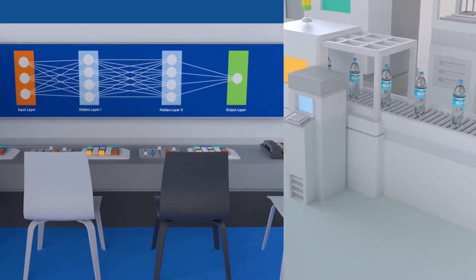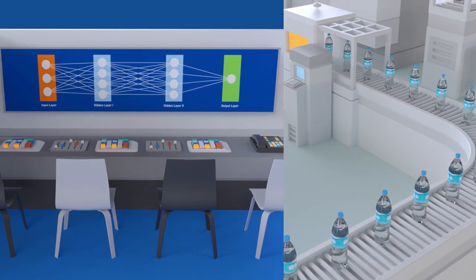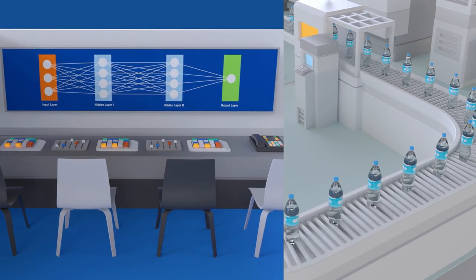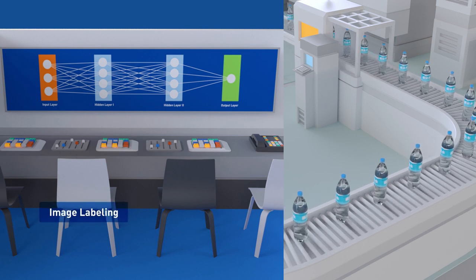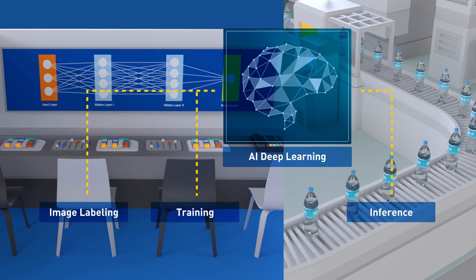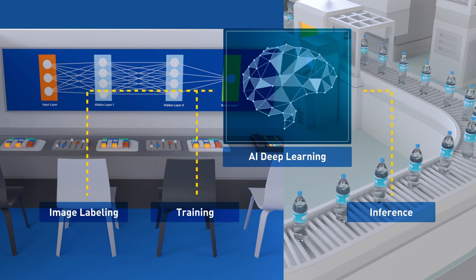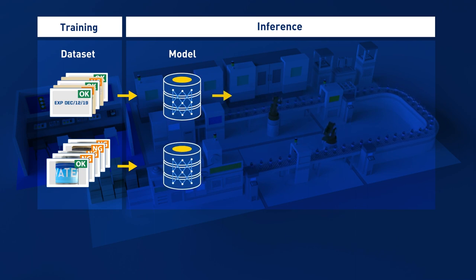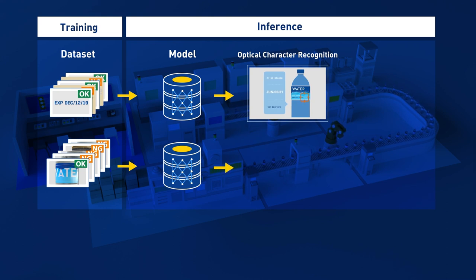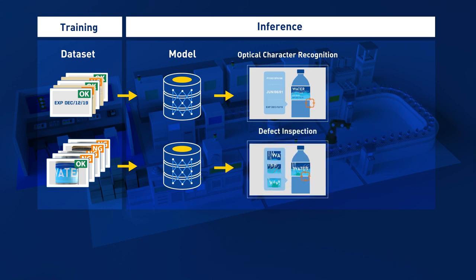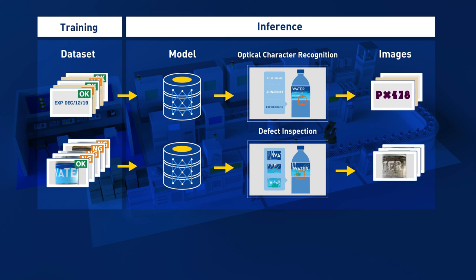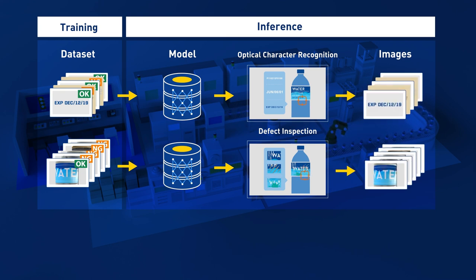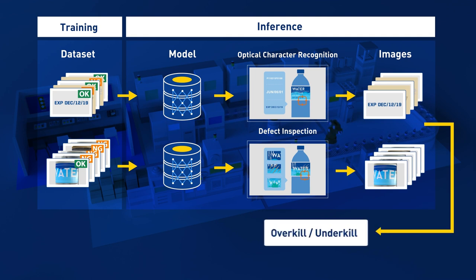The deep learning machine vision solution takes a new approach from image labeling and training to inference in order to reduce complexity and increase the consistency and flexibility of optical character recognition and defect inspection. In the process of deep learning, image data with labels indicating the identity of a particular object are analyzed by the system to train corresponding models on the objects to be identified. By taking the features of all image data into account, conclusions can then be drawn about the properties of a certain class. This process significantly improves identification rates and is called inference.